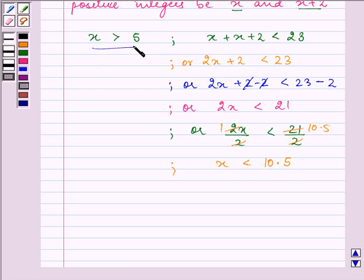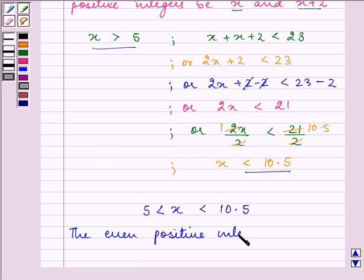the second condition has to be considered. Now, the positive even integer that is less than 10.5 but greater than 5 becomes that x has to be greater than 5 but less than 10.5. So, the even positive integers are 6, 8 and 10.